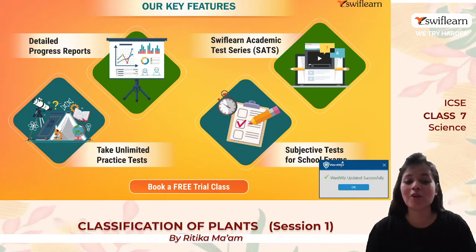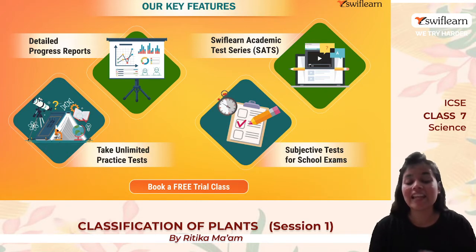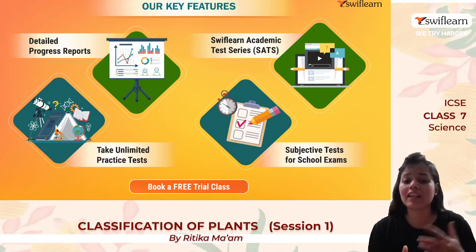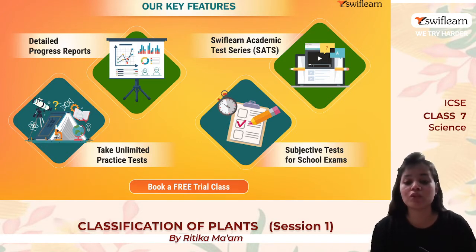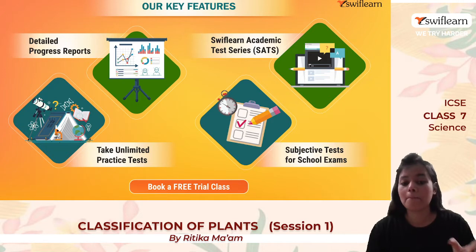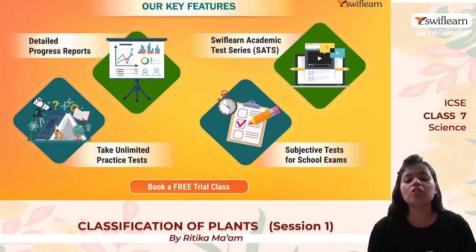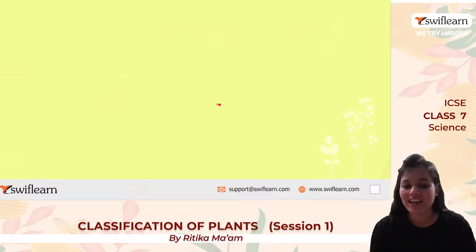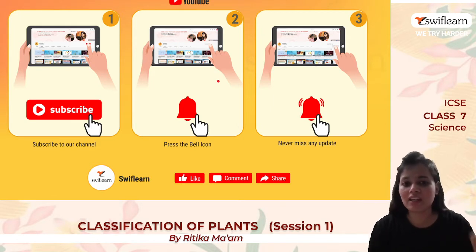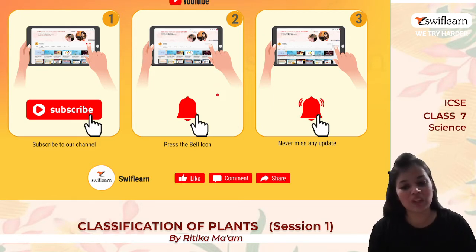We also cover your syllabus as per your school exam schedule. There are key features like detailed progress reports, the Swift Learn Academic Chess Series where you can compete with students of your grade, unlimited practice tests on the Swift Learn portal, and subjective tests. You can experience all this by booking your free trial class — just download the Swift Learn app from the Play Store. Please subscribe and press the bell icon so you don't miss any class.